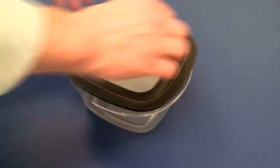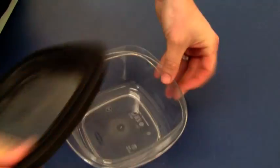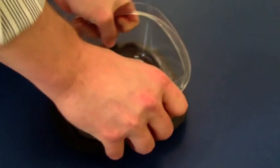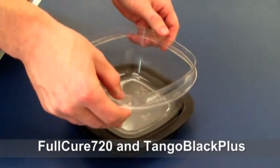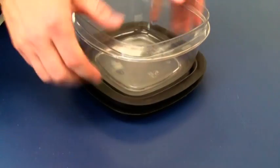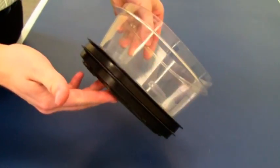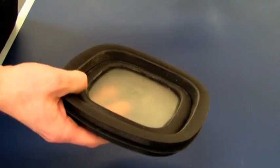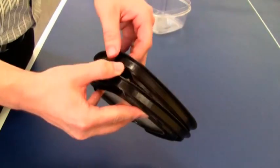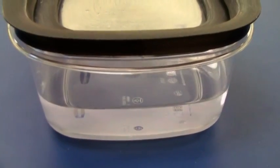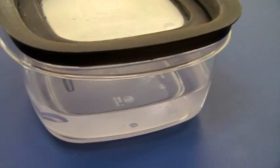To print the lid, a Connex machine was loaded with Fulcure 720 and Tango Black Plus. The semi-transparent material Fulcure 720 was selected for the center portion of the lid to simulate the rigid Tritan material. A digital material composite of Tango Black Plus and Fulcure 720 with a shore A value of 85 was chosen to replicate the flexible gasket of the lid.